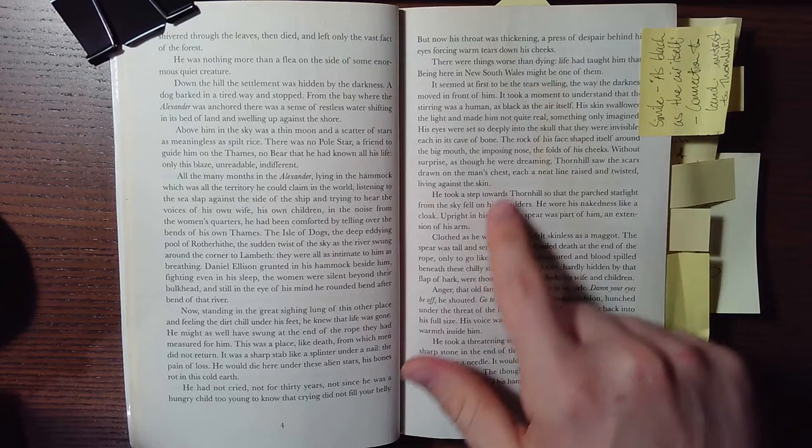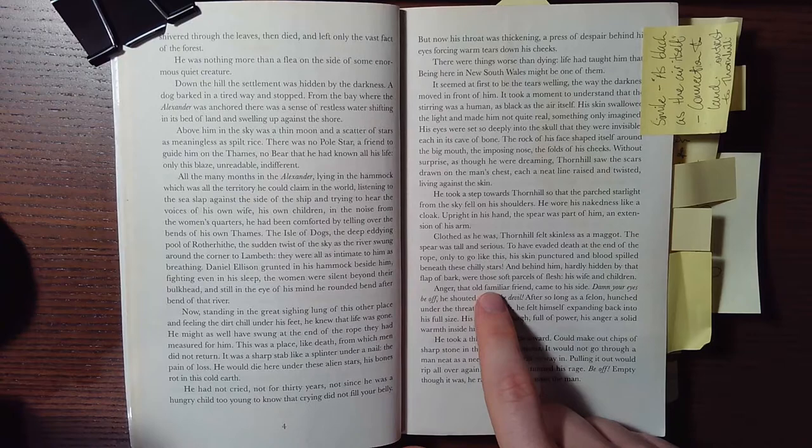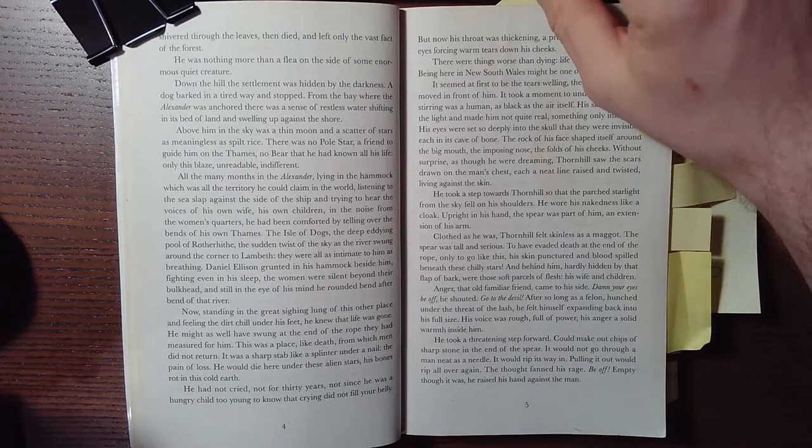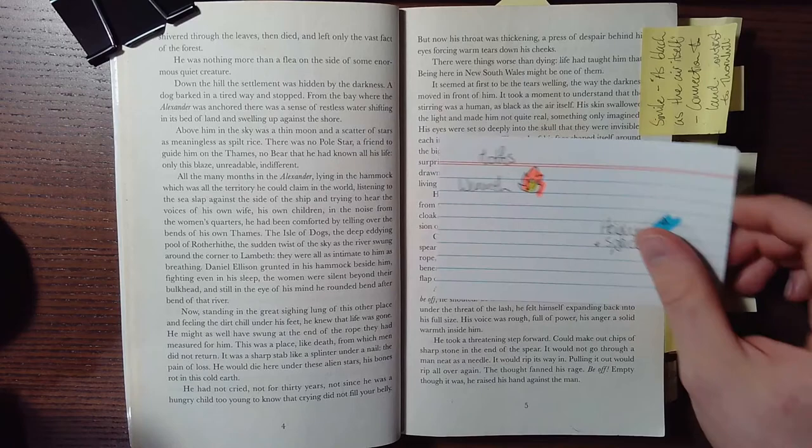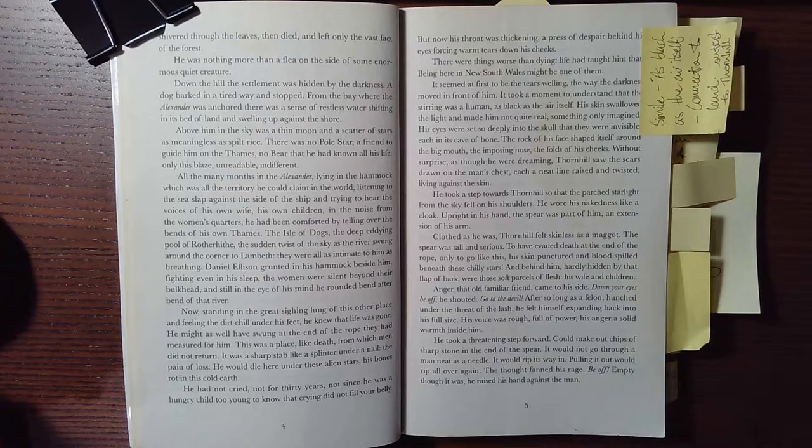As we move down, we're going to just talk about this idea here. Anger, that old familiar friend, came to his side. Damn your eyes be off, he shouted. So this brings in William's character. Anger for him is this warmth, and it warms him from the inside, and it's something that he needs in London, but he still draws upon when he's in Australia.